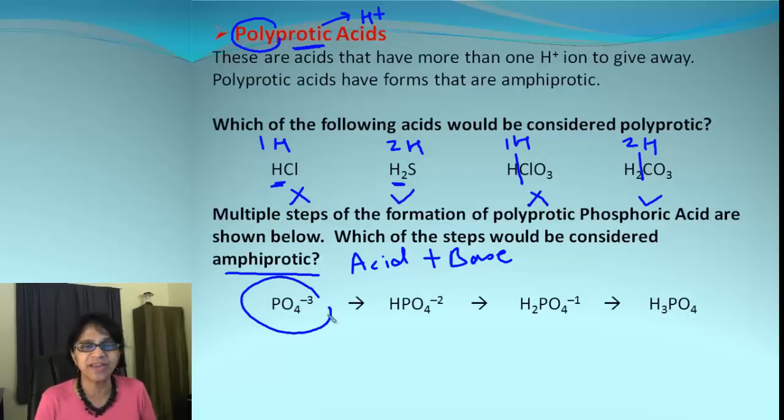If you look at phosphate, it can only gain a proton. It cannot lose because it does not even have any proton, so this is not an example of amphiprotic. Let's look at this: from HPO4, it can lose a proton and go back to phosphate, or it can gain a proton and get to the next one.